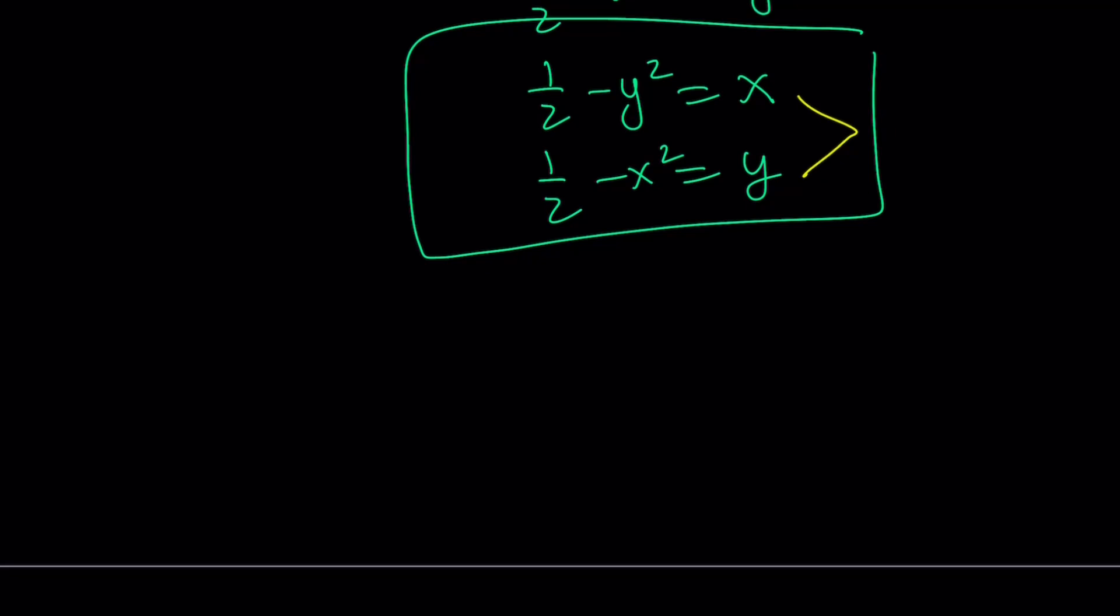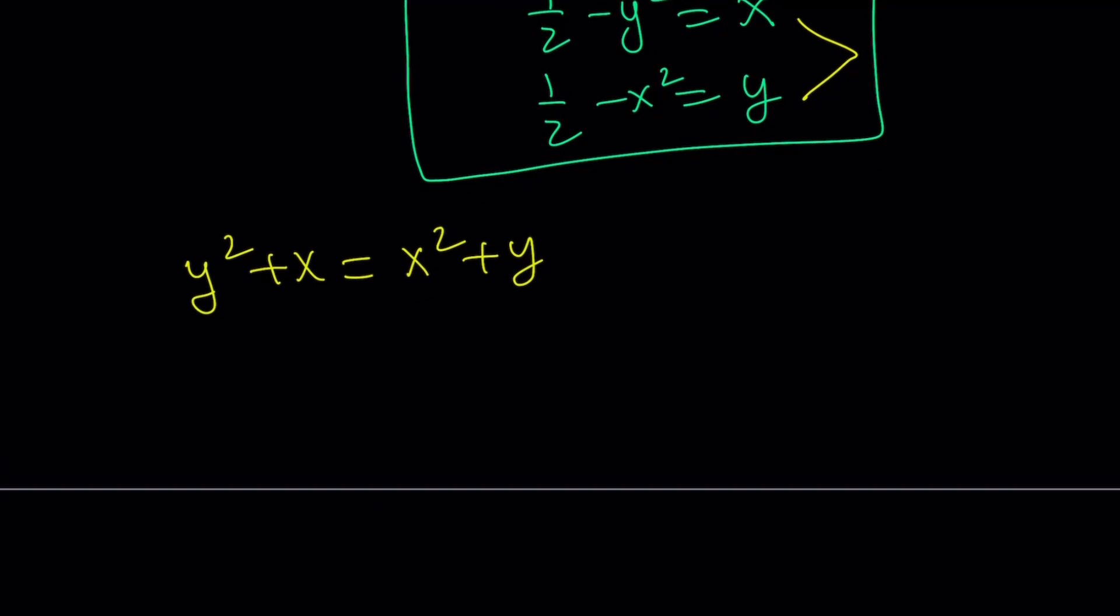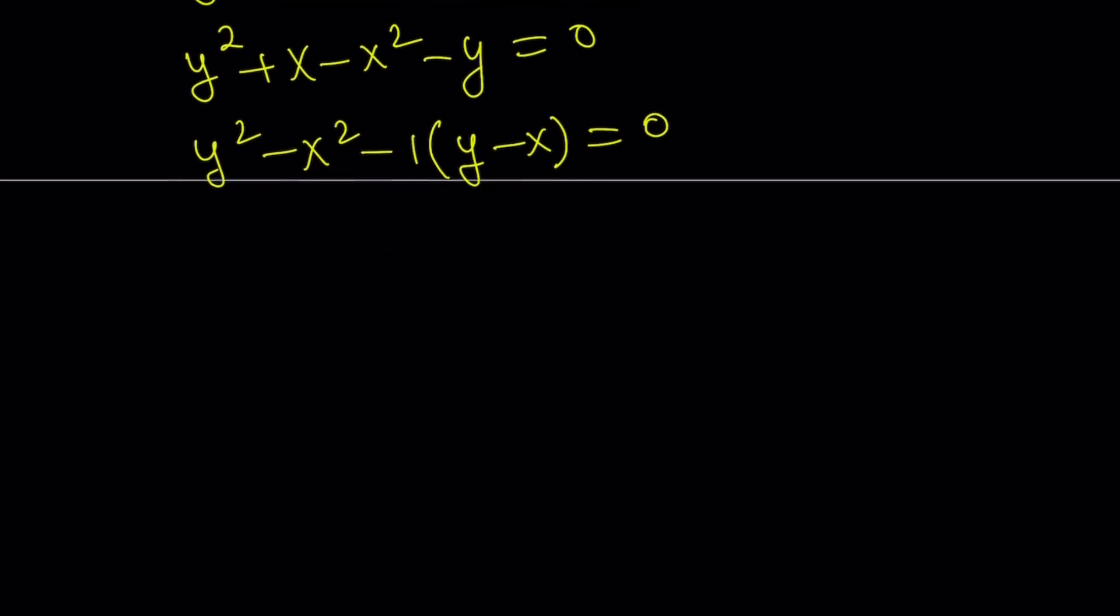And the way I want to do it is, we can isolate 1/2 in both equations, and then set them equal to each other. So kind of like y² + x = x² + y. Get rid of the 1/2, in other words. You could also subtract the equations. It is the same thing. Now, I want to put everything on the left-hand side. So I get y² + x - x² - y = 0. And then, I want to put together y² - x², and put a -1, and write this as y - x. So I kind of negate what's inside the parentheses.